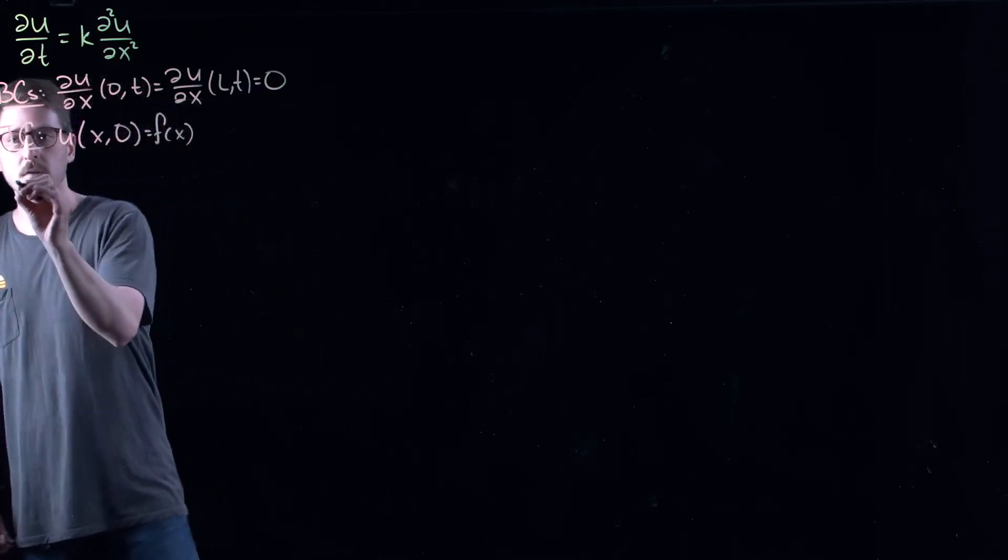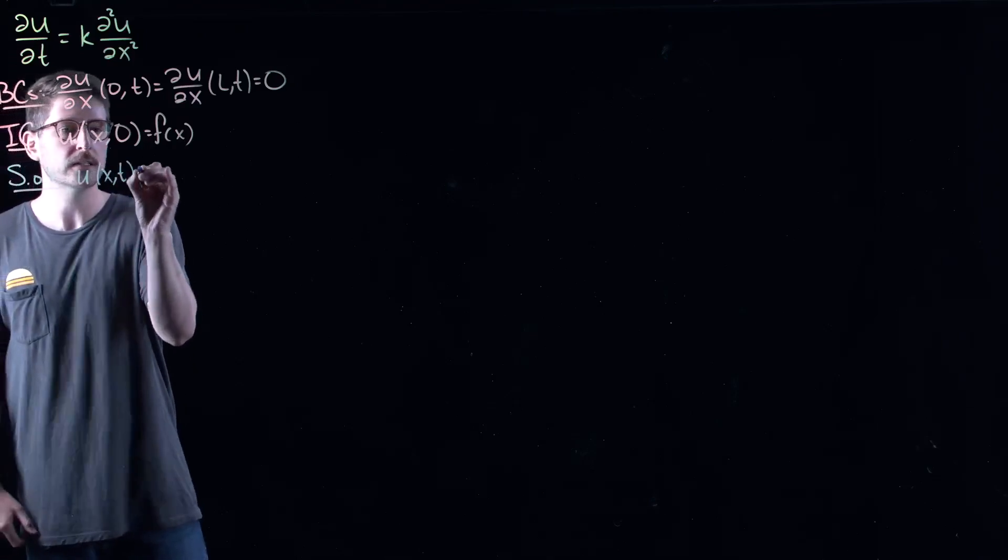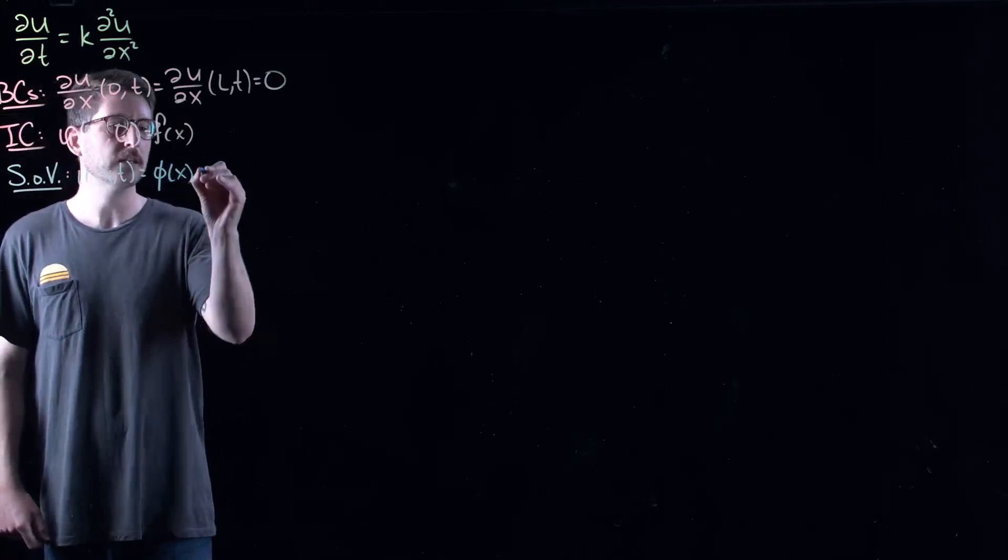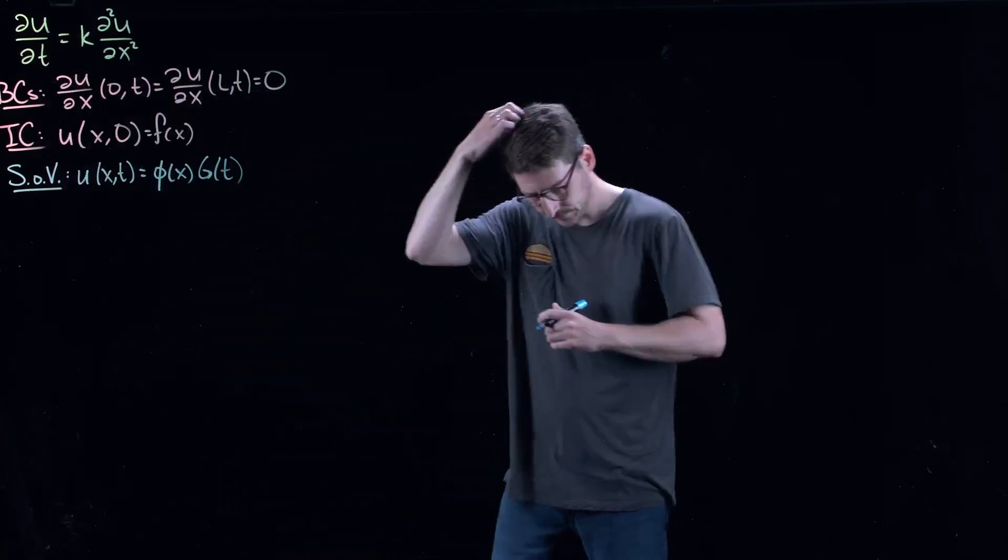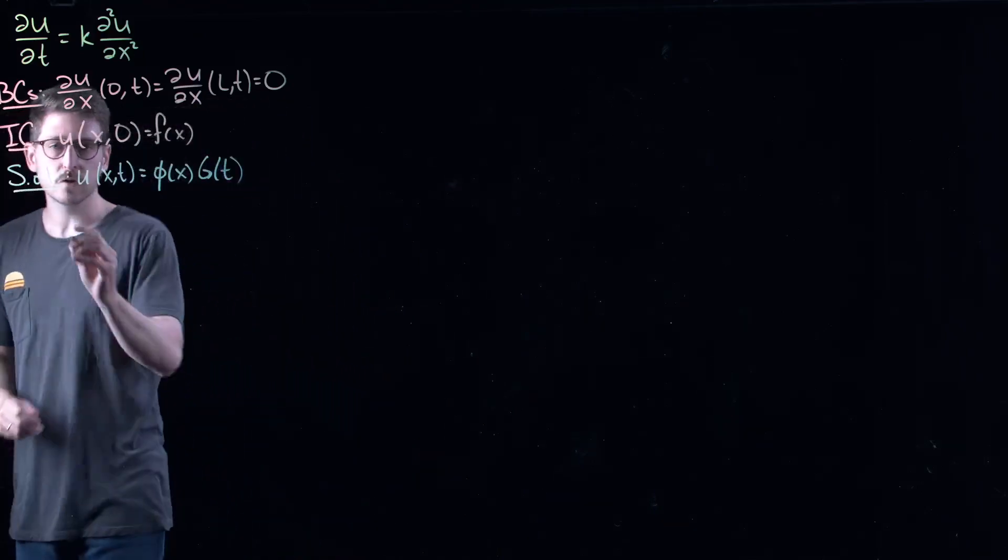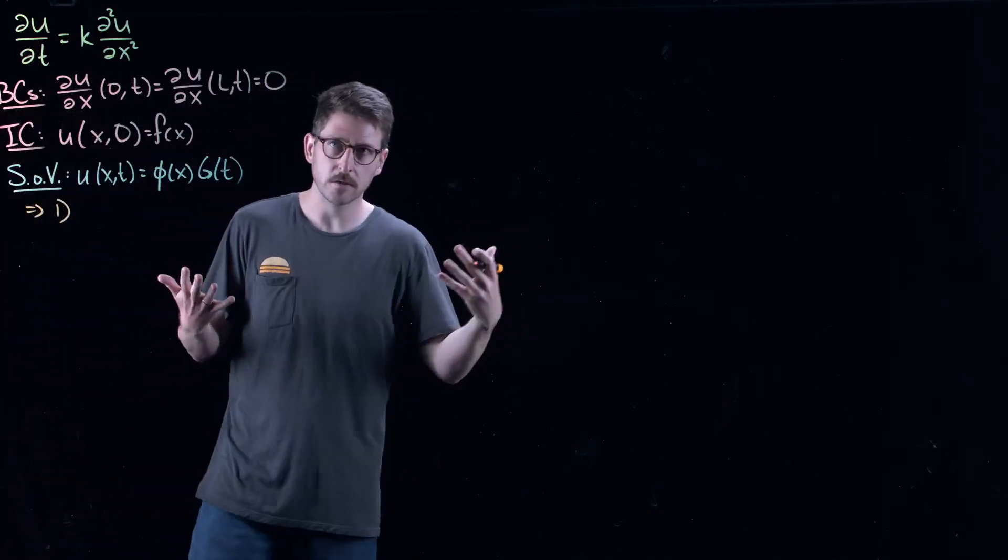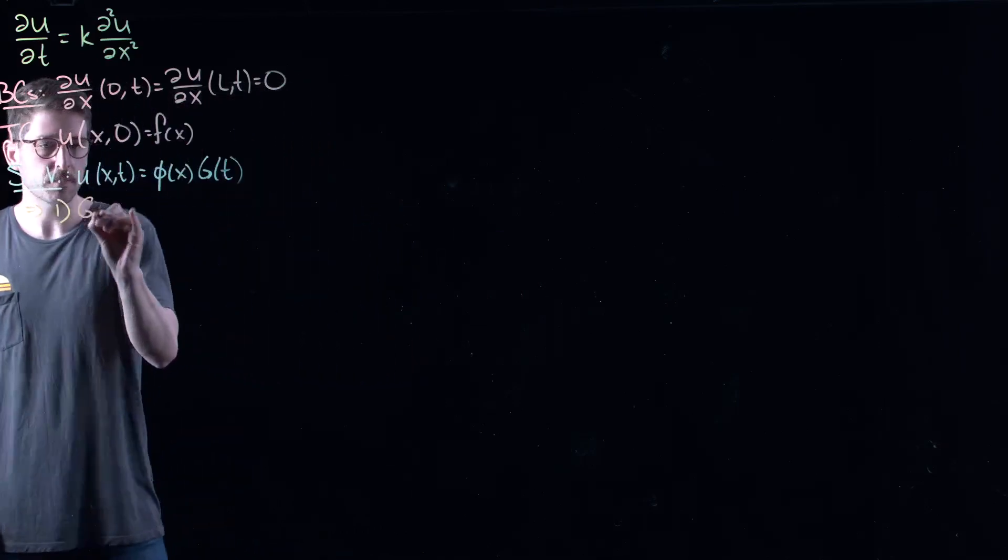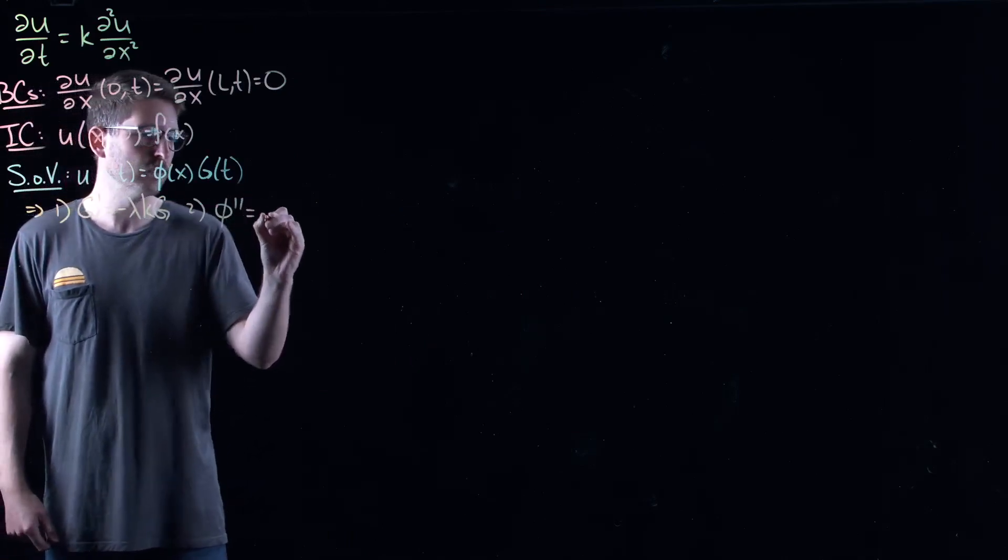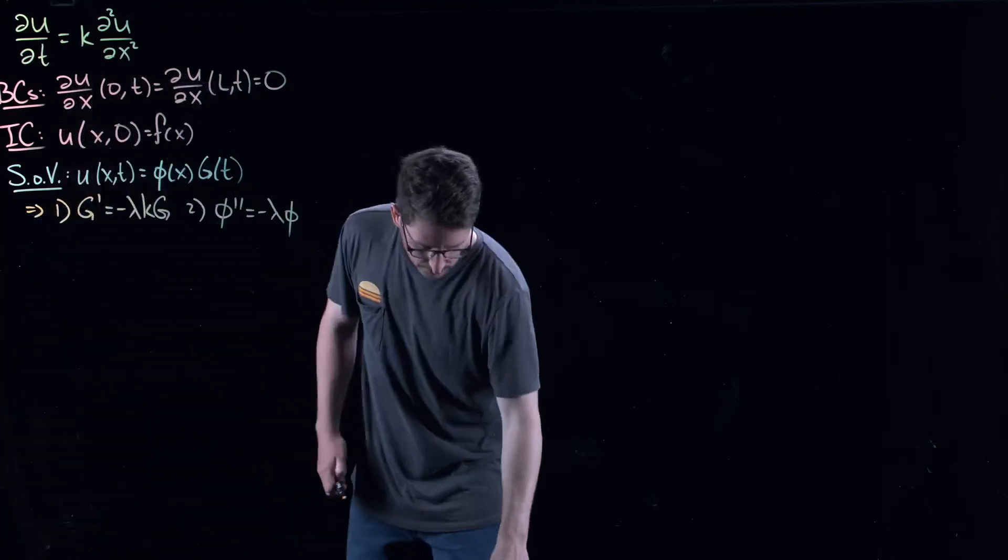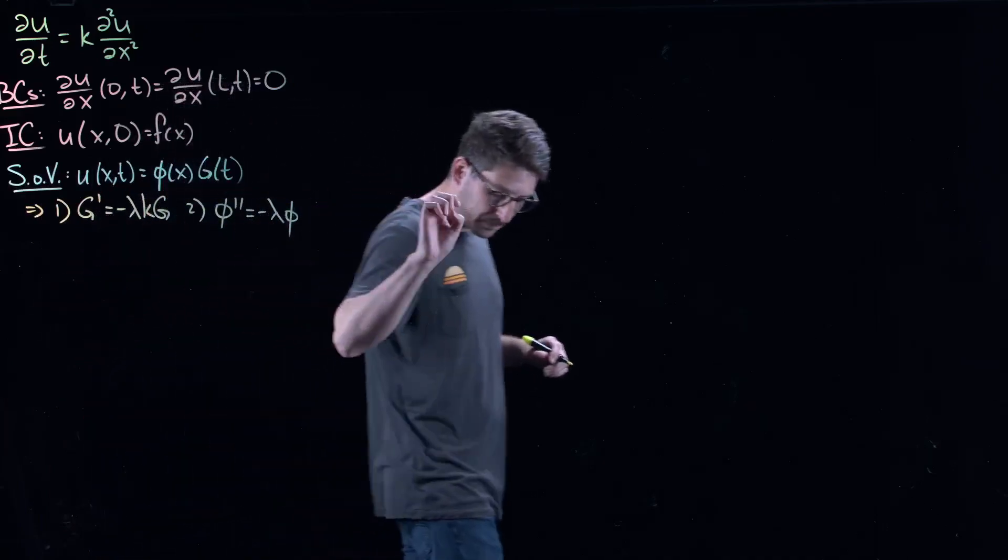We're going to do separation of variables. Separation of variables. Again, we're going to use the same notation, the same basic principles as before. We're going to assume that I have a function phi of x and a function g of t that make up my full u of x and t. And remember that this leads to two ordinary differential equations. Once you put this into the partial differential equation, you separate it out, you say it has to be equal to a constant. Again, the same as the previous example. I get g prime is equal to minus lambda k g. And I get phi double prime is equal to minus lambda phi.